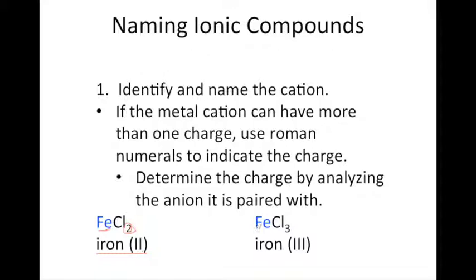In FeCl3, chloride has a minus 1 charge and we have three of them, so the sum of charges requires the iron to be +3. We would call that cation iron(III). If a metal can have variable charges, you must use a Roman numeral when naming that cation.